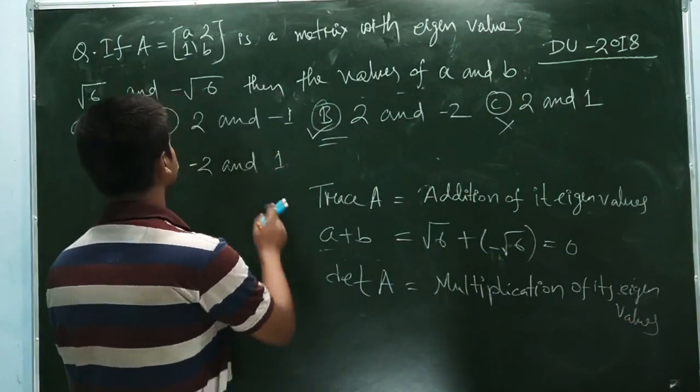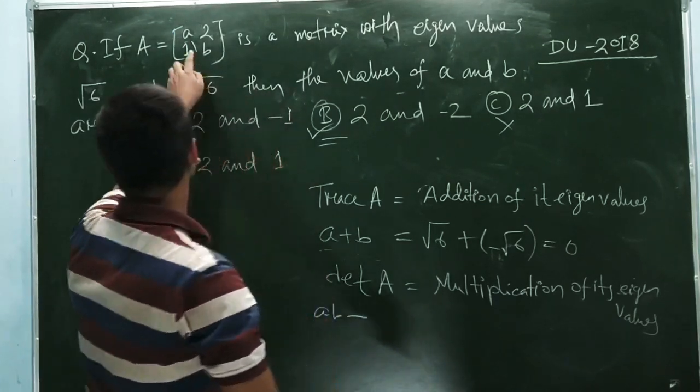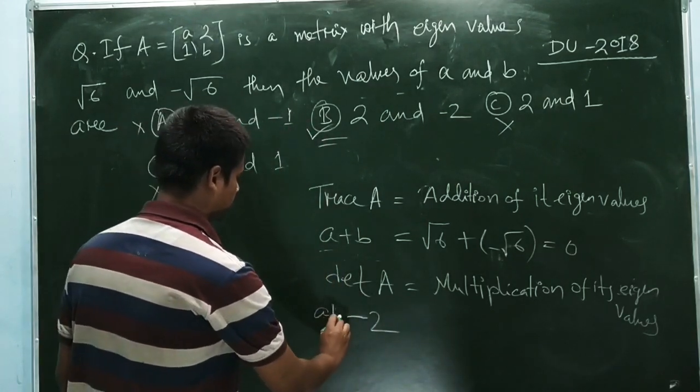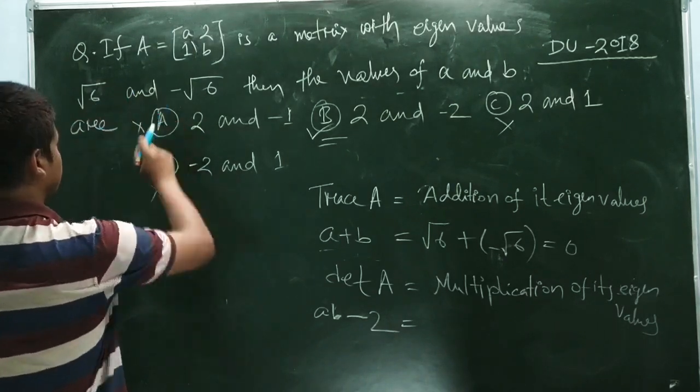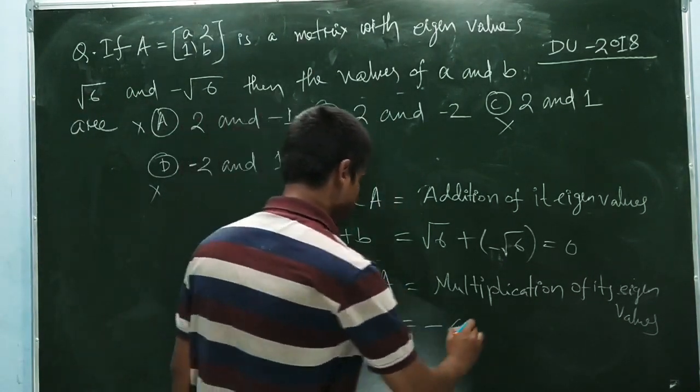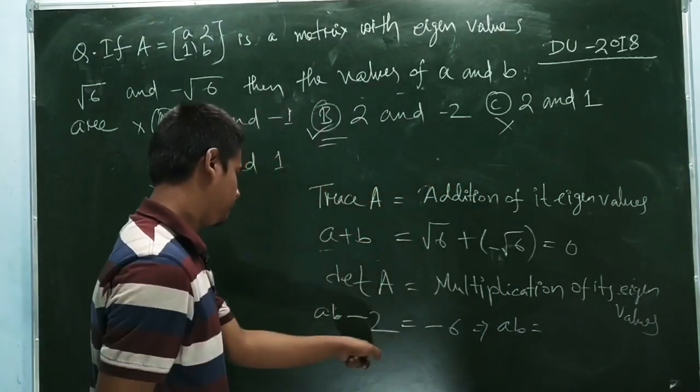Determinant of A is ab minus 2. So ab minus 2 equals root 6 times minus root 6, which is minus 6. Therefore ab equals minus 4.